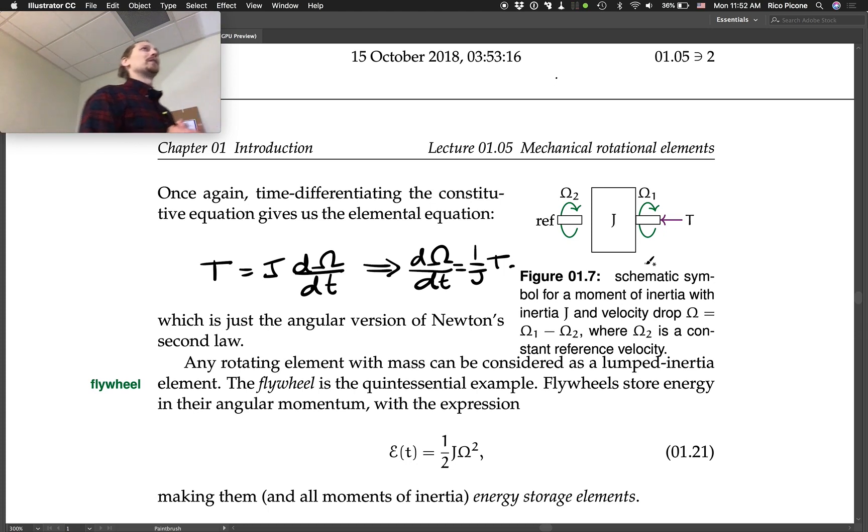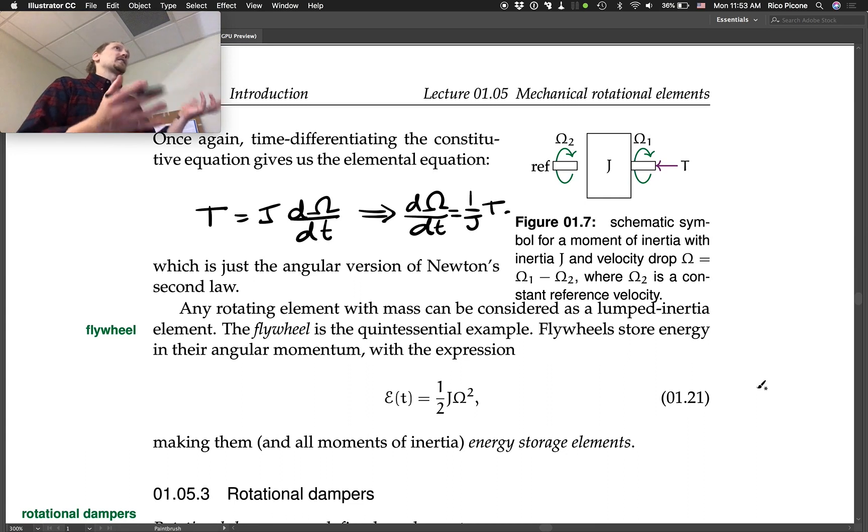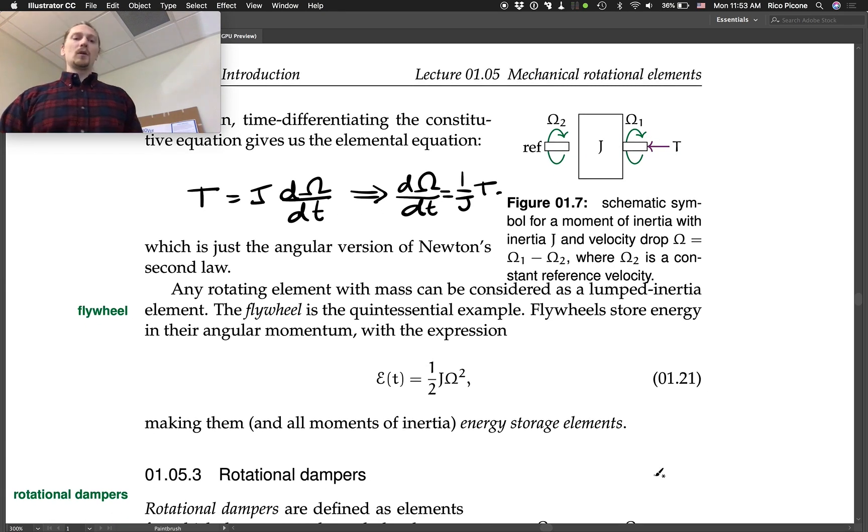And it is also a sort of nice way to think about other types of moments of inertia. So maybe it doesn't look like a flywheel, but you've got some heavy object that's rotating. So you say it's got some moment of inertia to it. Maybe it's just a shaft that has a big diameter and you need to take it into account when you do your calculation. So you put in a moment of inertia element into your system model. So anything that rotates with mass is going to have a moment of inertia to consider. Any rotating element with mass can be considered as a lumped inertia element. The flywheel is a quintessential example. Flywheels store energy in their angular momentum with the expression one half J omega squared, making them energy storage elements.